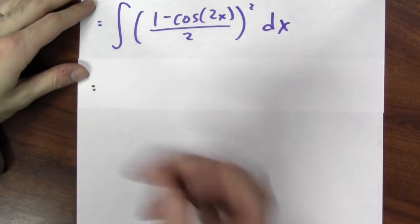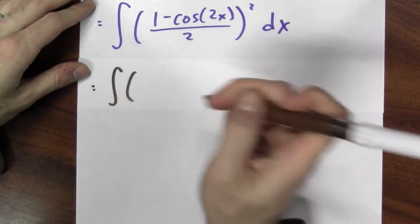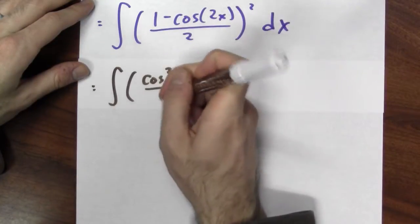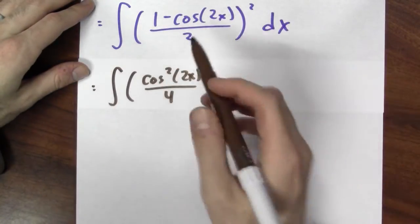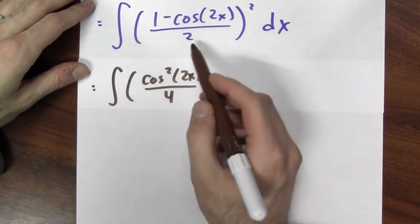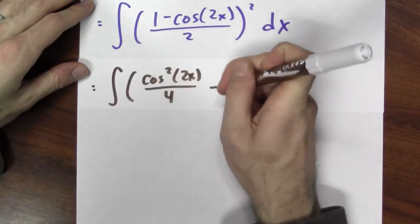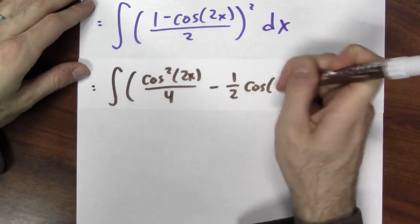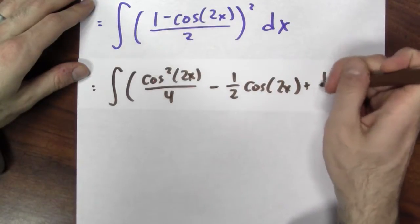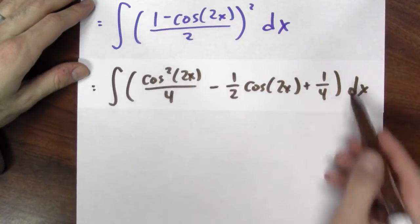Now I expand. So I get this is the same as integrating, well, the cosine 2x over 2 term squared is cosine squared of 2x over 4. And then there's a cross term, the 1 half times minus cosine 2x over 2. And there's two of those. So I'll end up getting minus 1 half cosine 2x, and there's the 1 half term squared, which is plus a quarter.